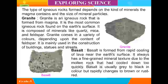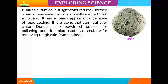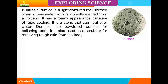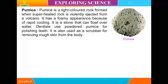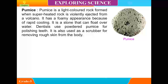Basalt. Basalt is formed from rapid cooling of lava near the earth's surface. It always has a fine grained mineral texture due to the molten rock that had cooled down too quickly. Basalt is usually gray to black in color but rapidly changes to brown or rust red. Pumice. Pumice is a light colored rock formed when superheated rock is violently ejected from a volcano. It has a foamy appearance because of rapid cooling. It is a stone that can float over water. Dentists use powdered pumice for polishing teeth. It is also used as a scrubber for removing rough skin from the body.